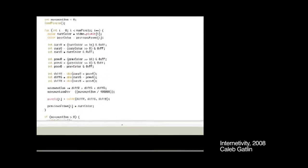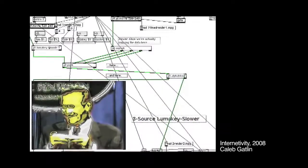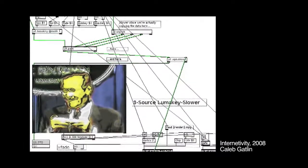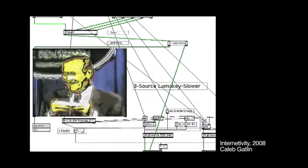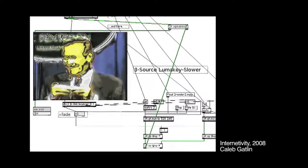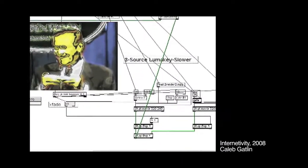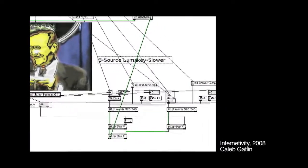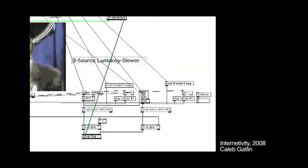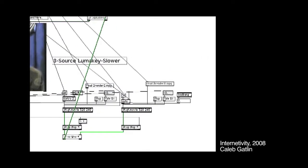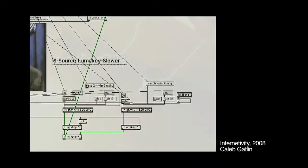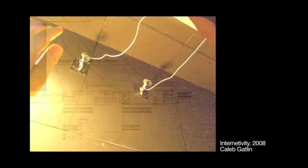The amount of movement recorded is sent as a variable to MaxMSP, which uses it to control the playback speed as well as the opacity of the two video layers that overlap each other.